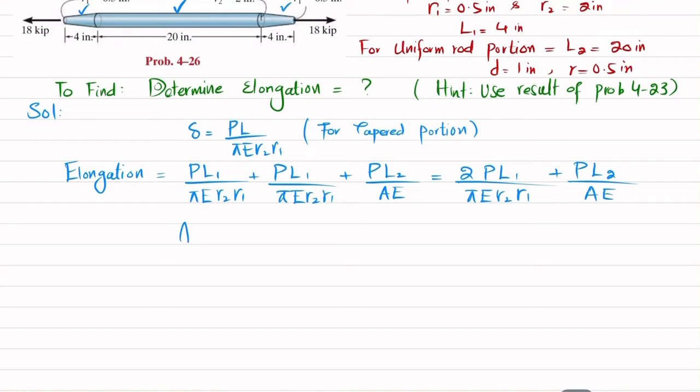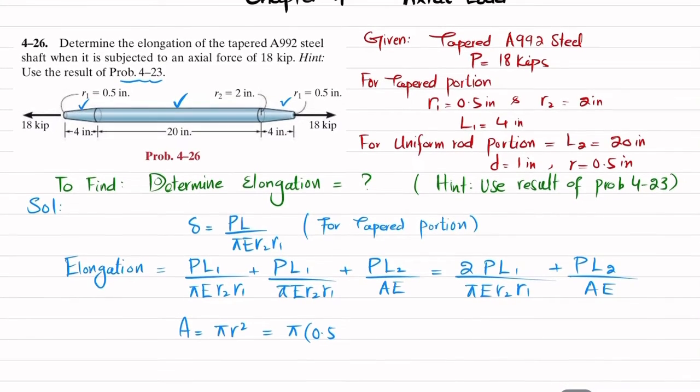A can be obtained. You know that area of circular rod is pi R squared. So you can put the value pi multiplied by R is 0.5. R is not 0.5, R is actually 2.